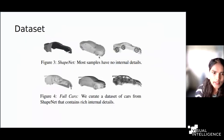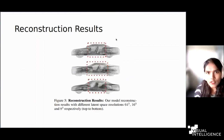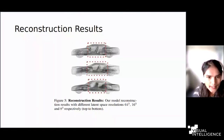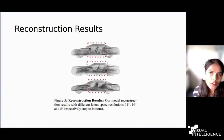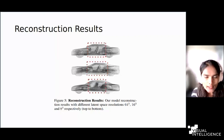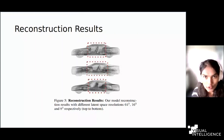We performed an ablation study in the first stage of training with different latent resolutions: 64³, 16³, and 8³, with the same latent embedding dimension of 497. With 64³ you can clearly see the seats and steering in the reconstruction auto-encoding performance. With 8³ the shape is already shattered and you cannot clearly see the seats. Therefore, to bring a trade-off between fidelity and memory footprint, we chose 16³ as the latent volumetric resolution.